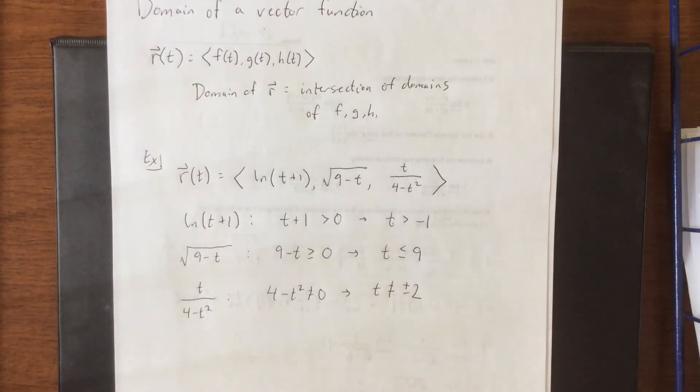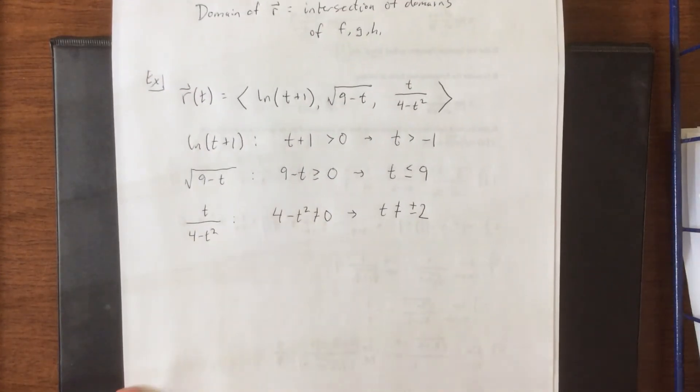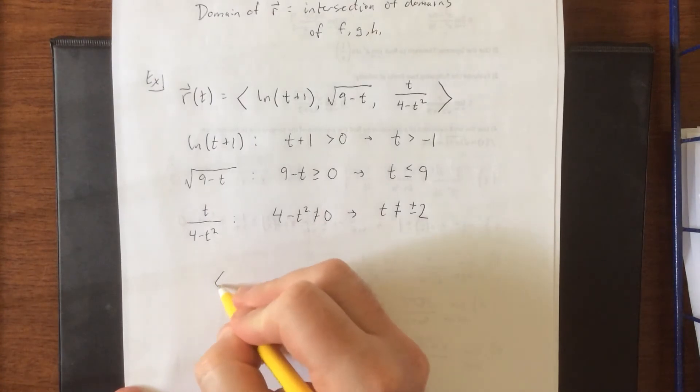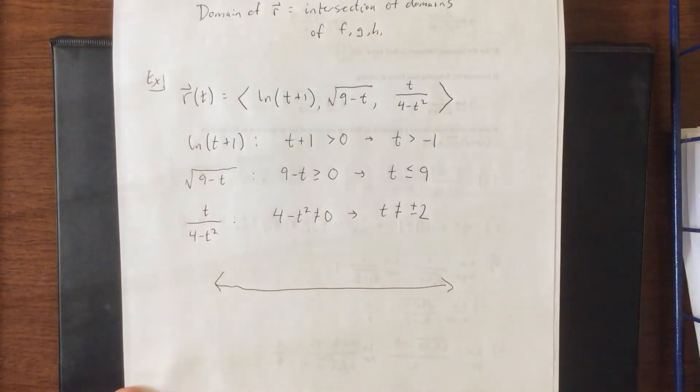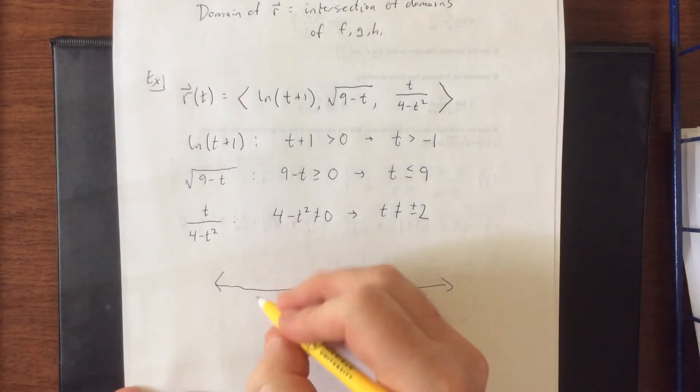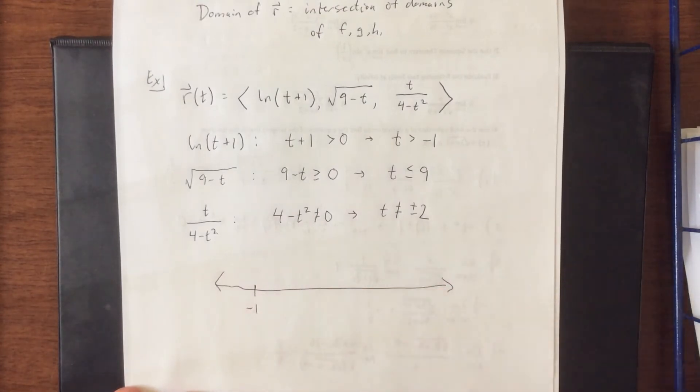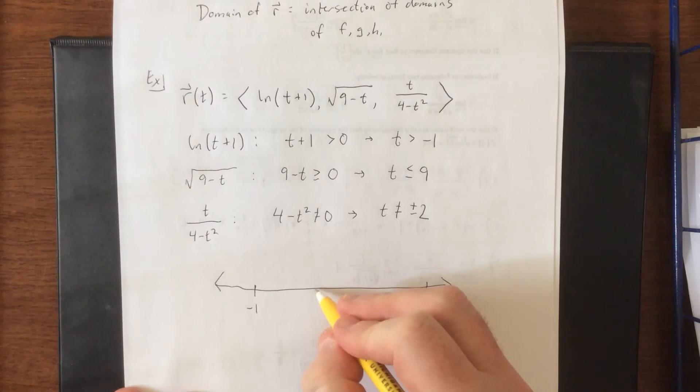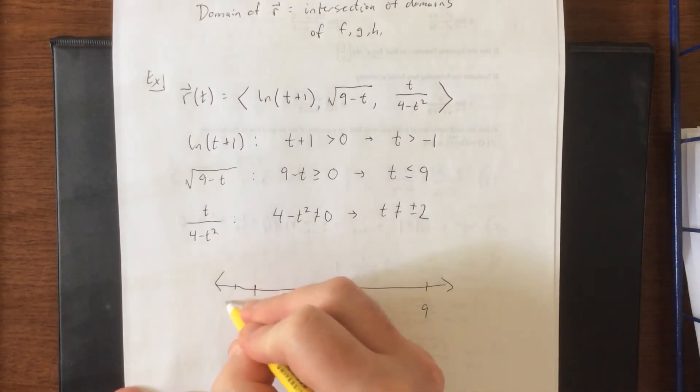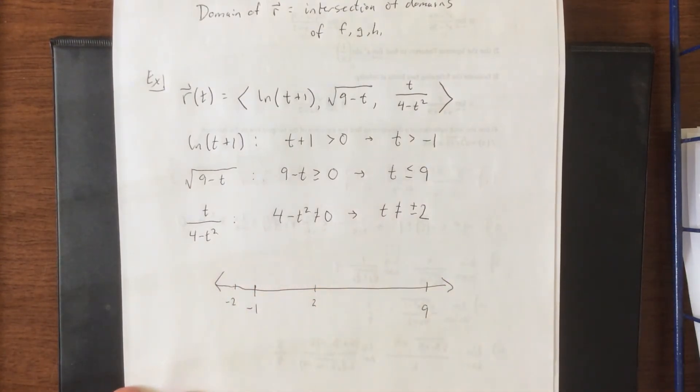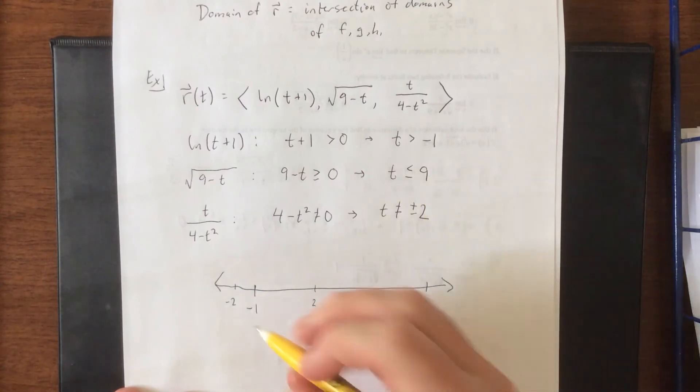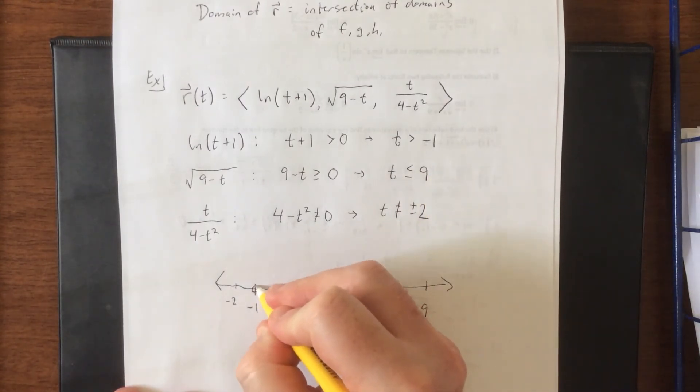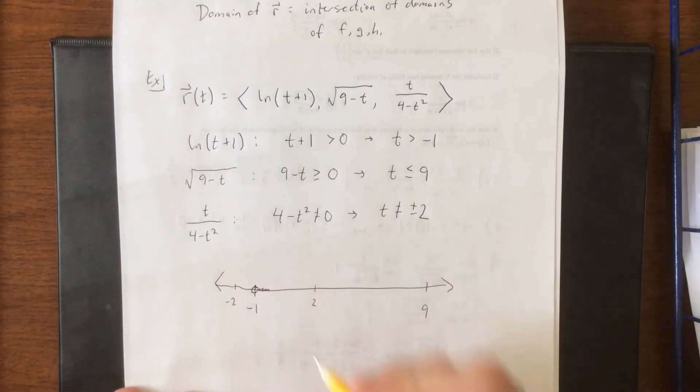So what I'm going to do is take all of these domain restrictions and put them on a number line altogether. So we have something interesting at negative 1, we have something interesting at positive 9, and then we have interesting things at both positive 2 as well as negative 2. So greater than negative 1 means that we will be open circle at negative 1 and shade to the right.